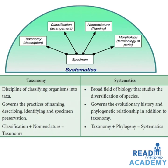What are the differences between taxonomy and systematics? Taxonomy is the discipline of classifying organisms into different taxa, whereas systematics is a broad field of biology that studies the diversification of species. Taxonomy governs the practices of naming, describing, identifying, and specimen preservation, whereas systematics governs evolutionary history and phylogenetic relationships in addition to taxonomy. Classification and nomenclature equals taxonomy; taxonomy plus phylogeny equals systematics.